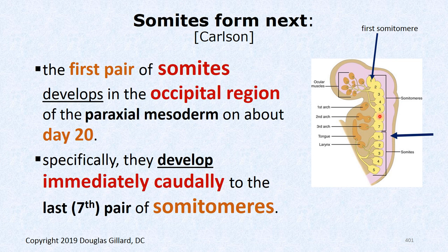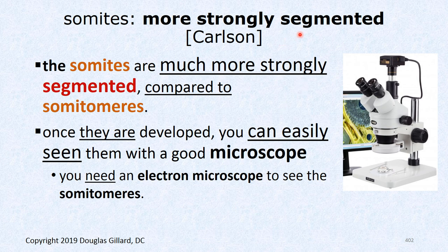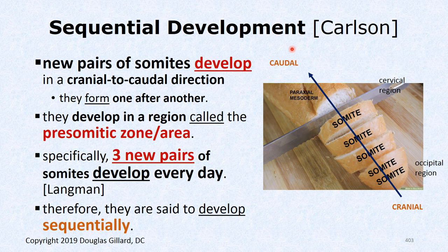After we get seven pairs of somatomeres formed, we finally get the first somite, which forms around day 20. Somatomeres form in the cranial region — good test question. The first somites form in the occipital region, caudally to the last pair of somatomeres. Strongly segmented somites can be seen with a good light microscope; somatomeres require an electron microscope.